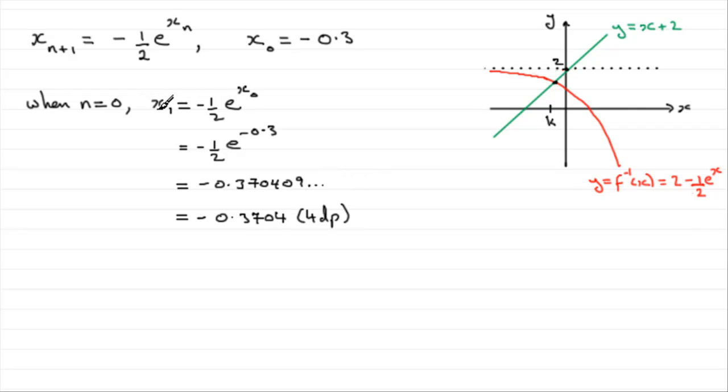Now to get x2, all we need to do is really much the same. We need to say when n equals one, step it up by one unit. When n equals one, we have x one add one, x subscript two, equals minus a half of e to the power x with the n, and n is one so that's x1. Don't put this rounded version in, put this unrounded version in for x1. If you do that, you should find that what you get out on your calculator is minus 0.34522 and so on, which when rounded to four decimal places is going to be minus 0.3452. So there's our two answers for this question.